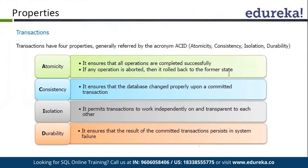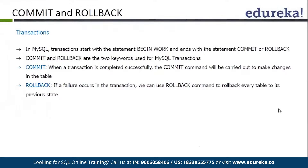This is the ACID principle that we follow in transactions. Transactions basically begin with BEGIN and end with COMMIT or ROLLBACK. Either we commit our transactions, or if there is an issue, we rollback our transaction. COMMIT simply means if the transaction is completed successfully, the commit command will make the changes permanent, and ROLLBACK means if there is an issue in any transaction action, everything will be rolled back.